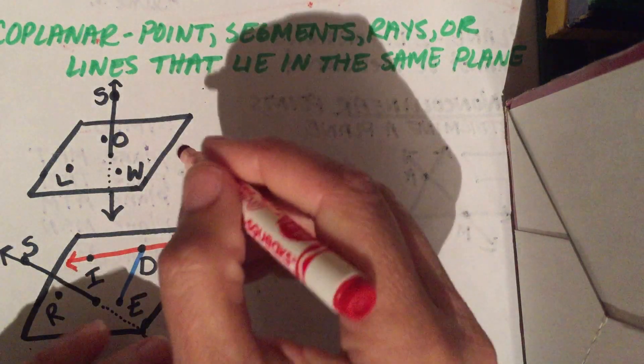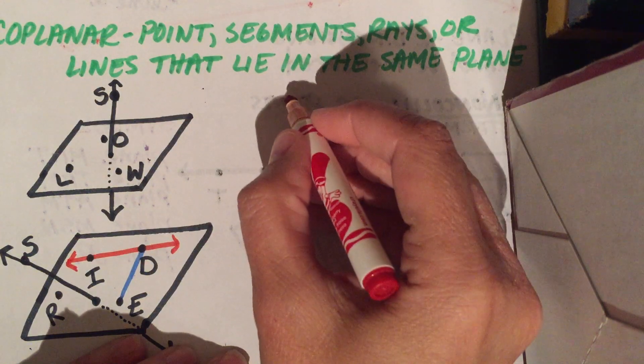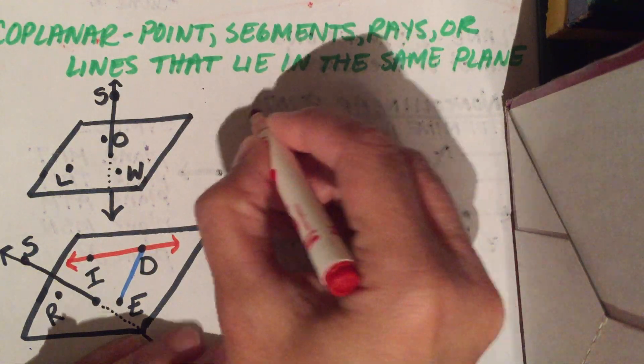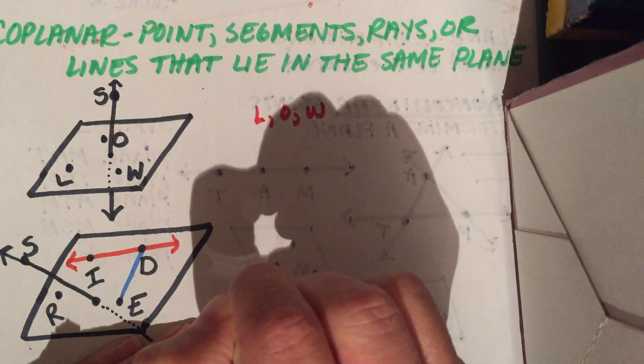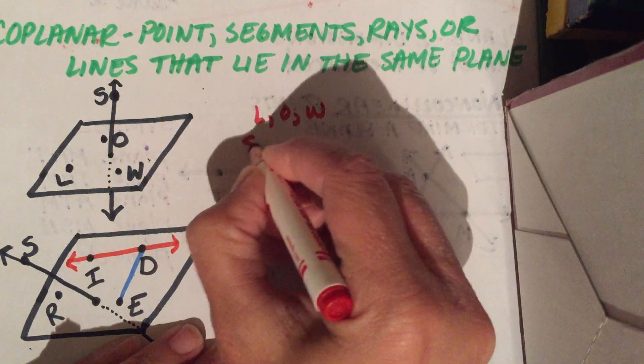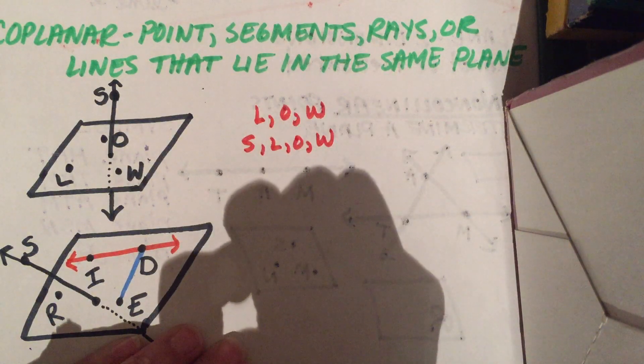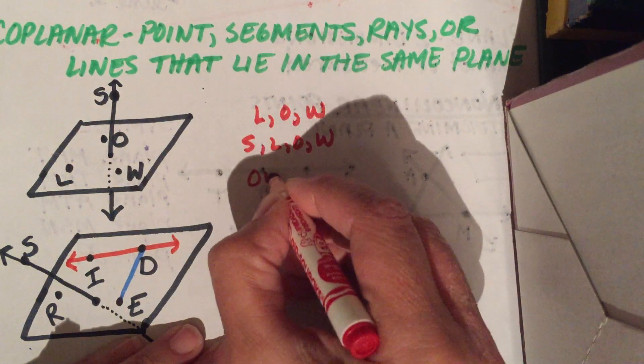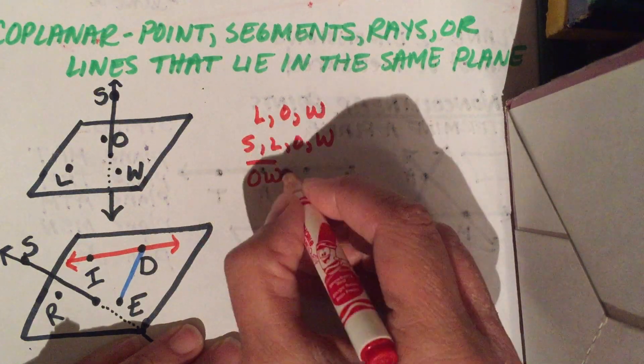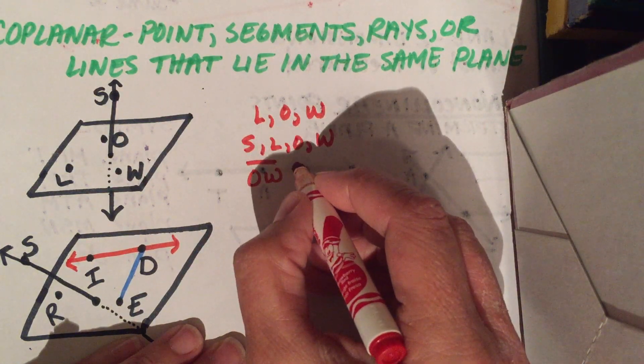I'm looking at these two pictures and let's see if we can make some determinations. On the first figure, let's say L, W, and O. S, L, O, and W. Segment OW and line LS.